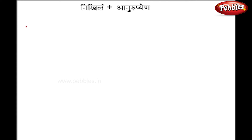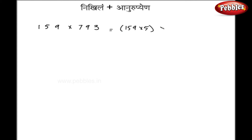Now I will go one step further and instead of using Anurupyena only to the base, I will use it on one of the numbers also. We will take 159 into 793. Now both of these numbers are odd. So I have to manipulate one of the numbers: 159 multiplied by 5, then multiplied by the original number 793. So we get 795 multiplied by 793. Now both of these numbers are near to 800.